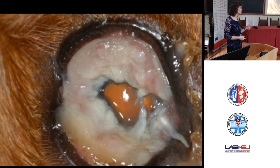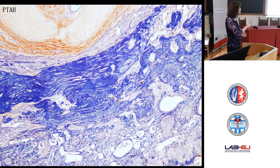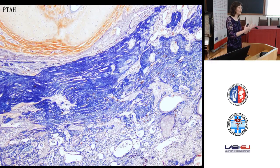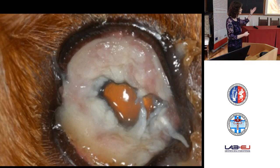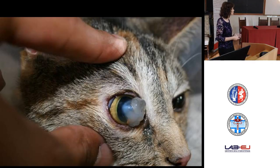This is something seen most commonly in Dobermans — it is called ligneous conjunctivitis. Think of it as being really hard, like wood. It is seen in association with plasminogen deficiency. This is basically fibrin that accumulates. This is a special stain for fibrin — all this blue material corresponding to PTAH-stained fibrin accumulates in the conjunctiva, but can also be in the oral cavity, esophagus, even the pericardial sac, and can certainly interfere with vision. This is a problem that Dobermans are known to get in association with plasminogen deficiency.